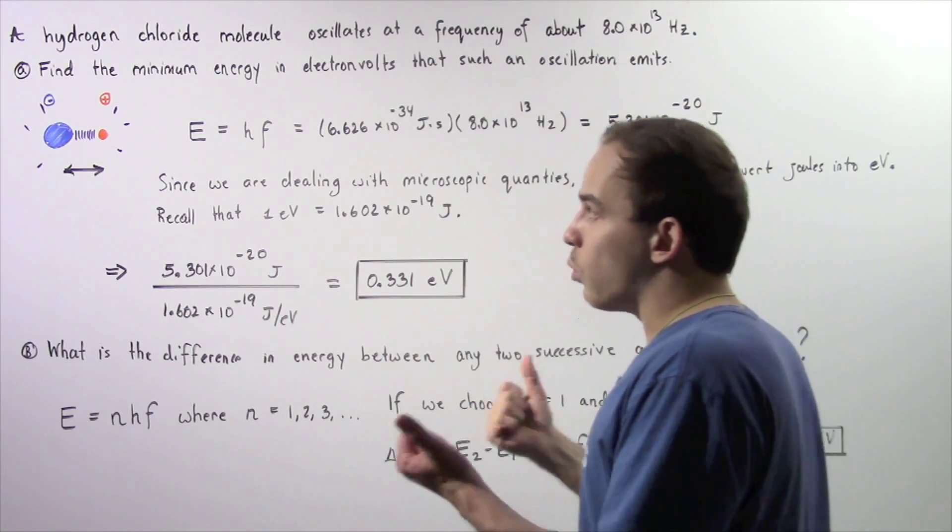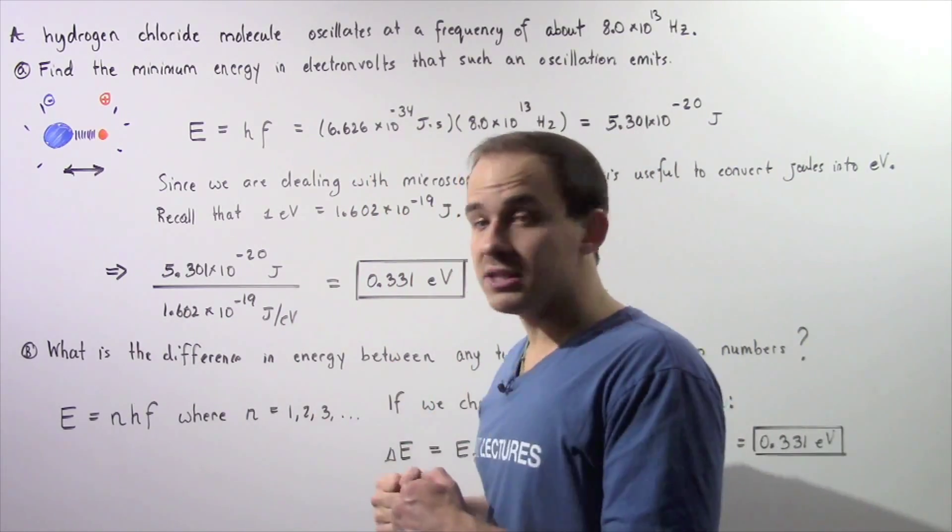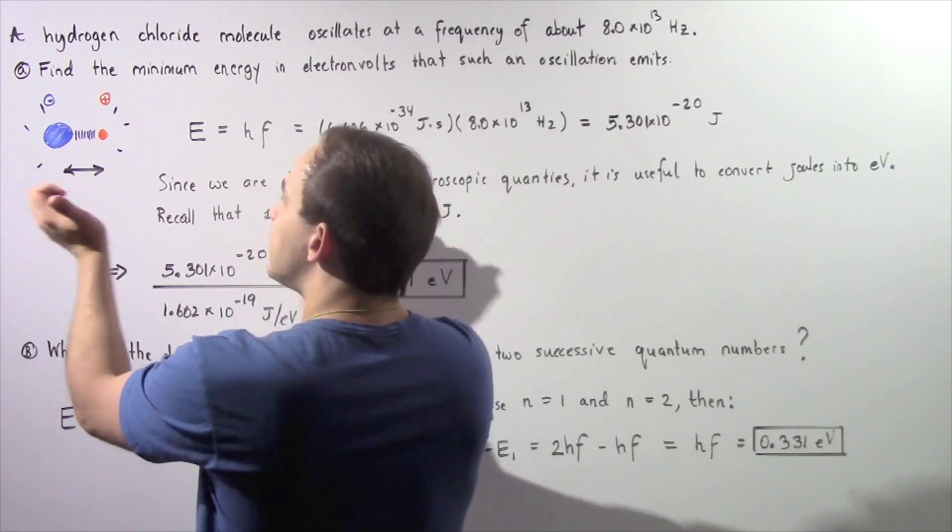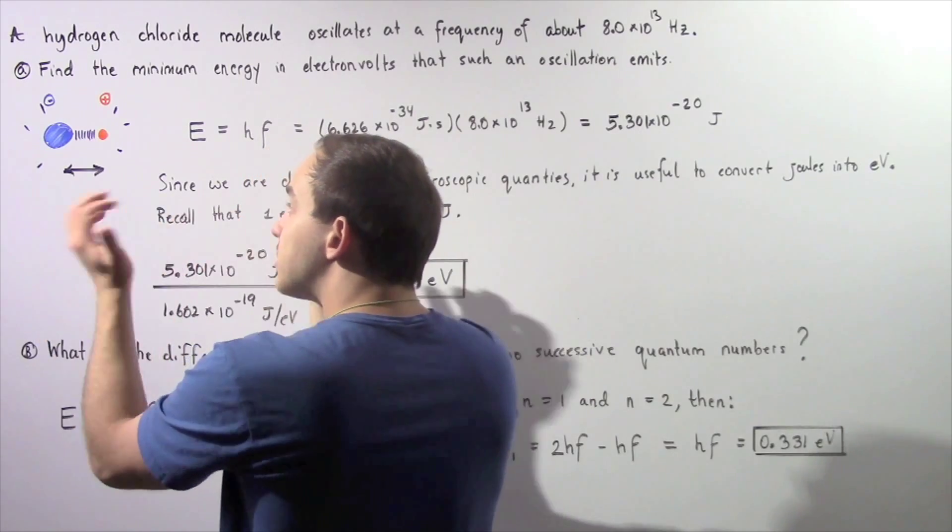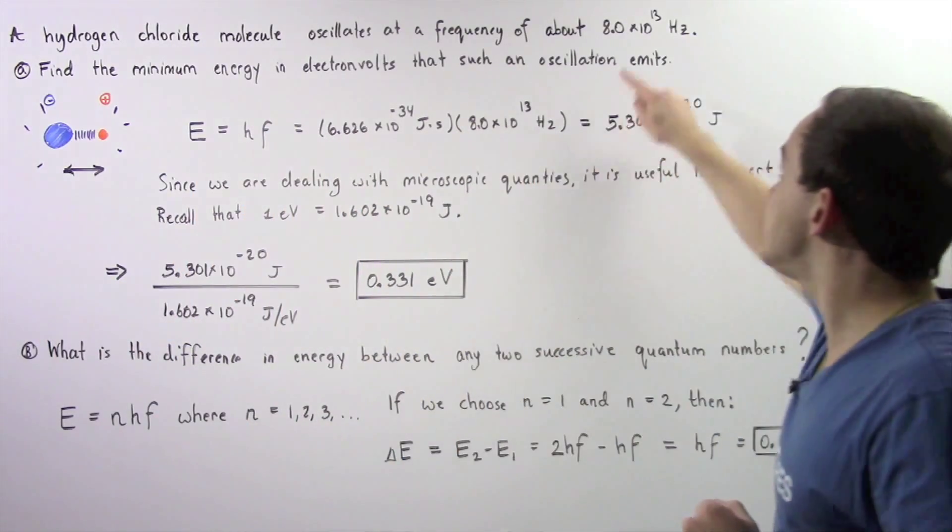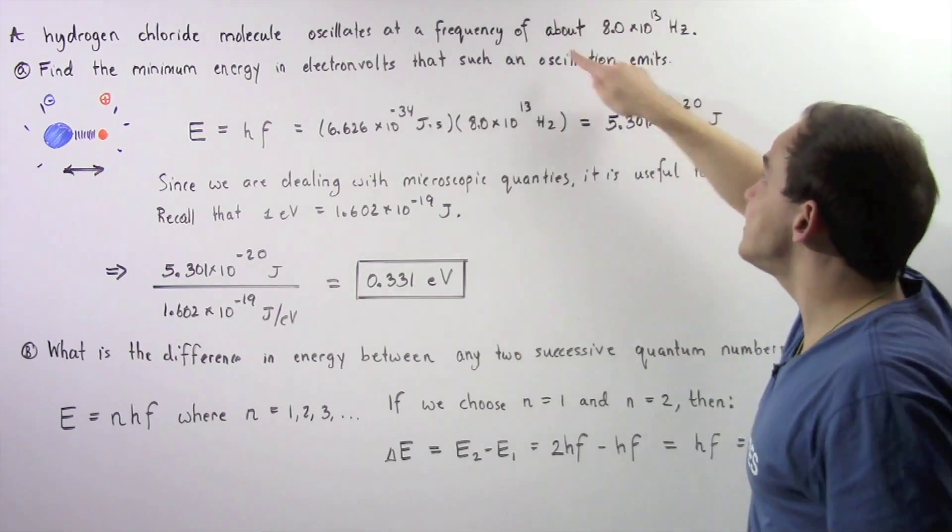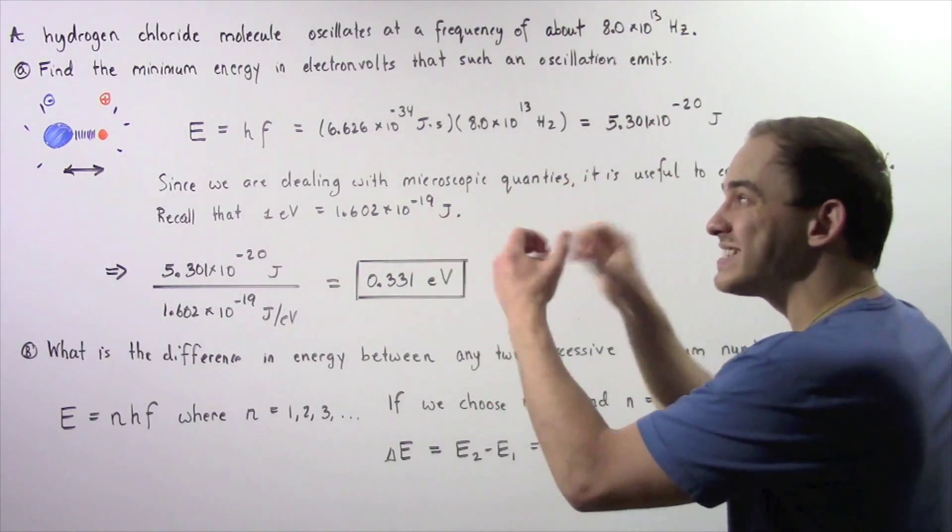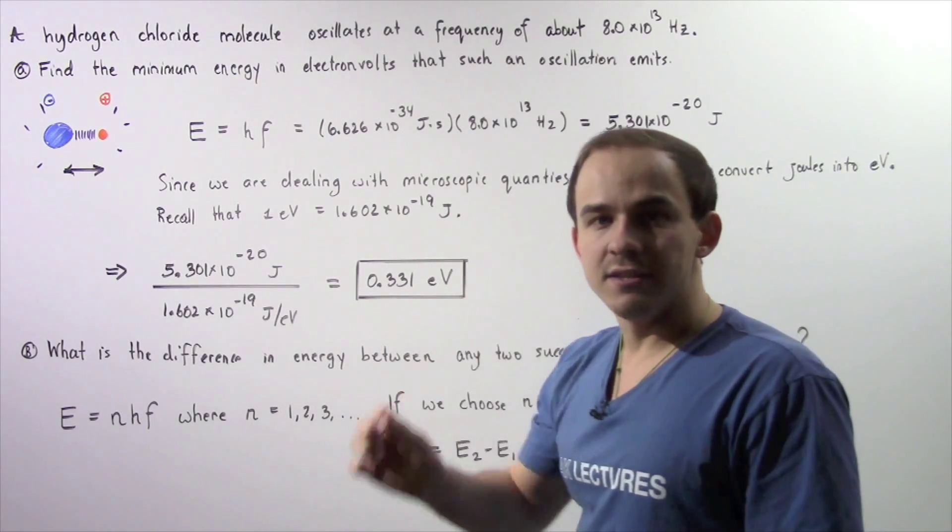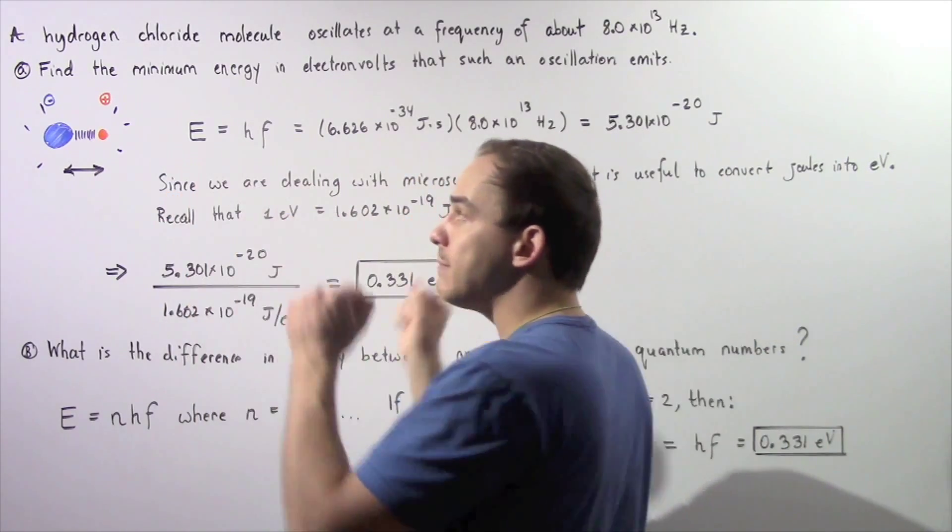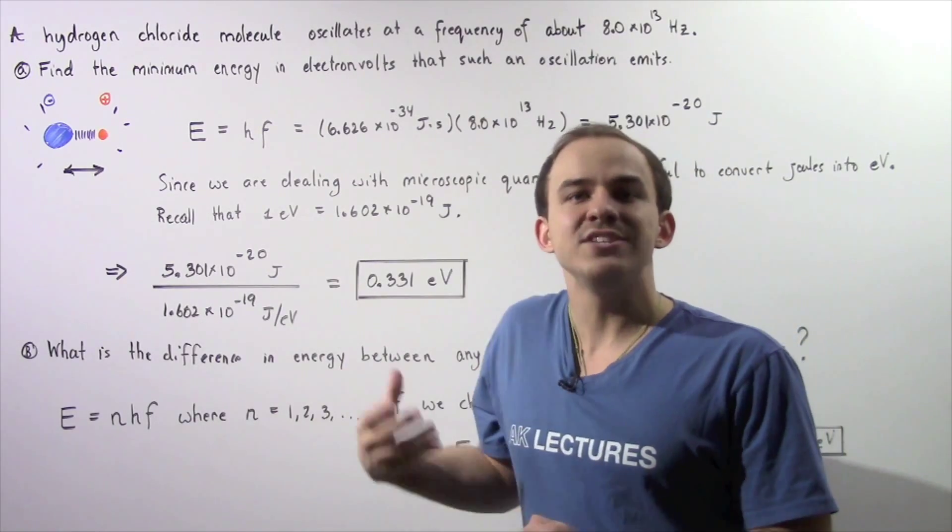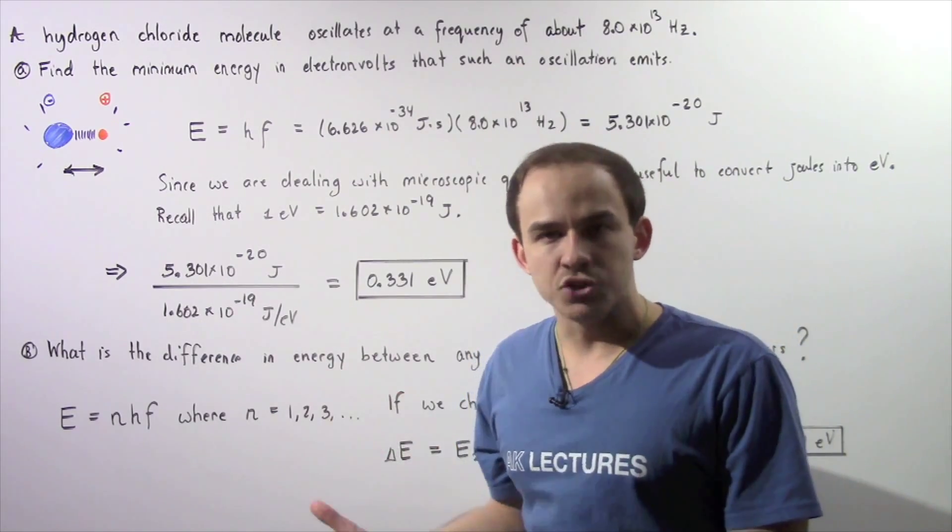Now, what happens on the subatomic level is these two molecules oscillate back and forth. In fact, they oscillate very, very quickly. This tells us that it oscillates 8 x 10^13 full cycles every single second. And every time it oscillates, it either emits or absorbs a certain quantity of energy.